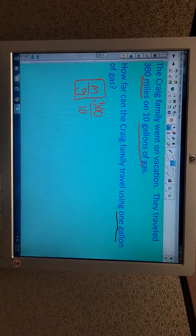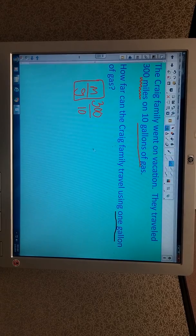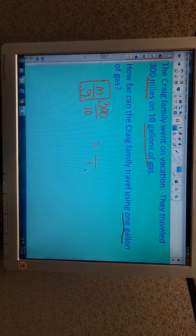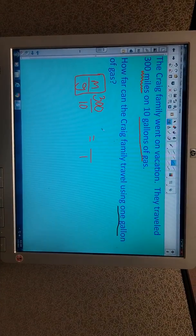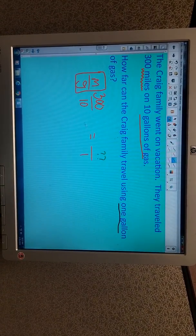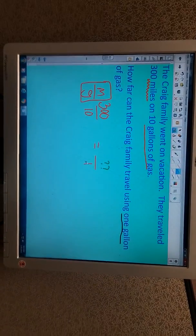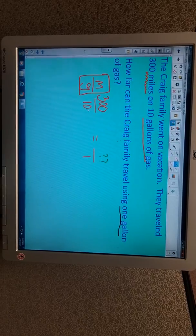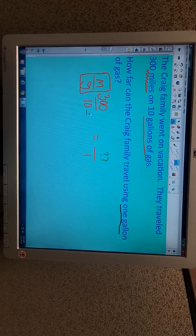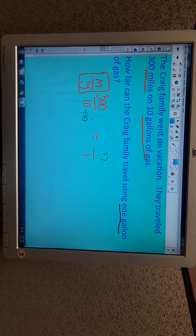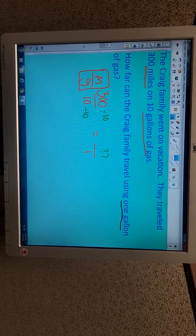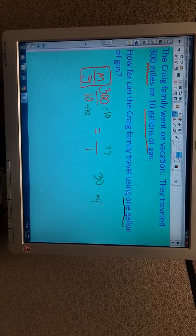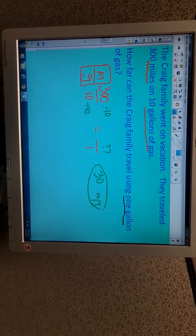As we keep reading, it says how far can the Craig family travel using one gallon of gas? This is called a unit rate. A unit rate has a denominator of one. So we want to know how many miles, that's what we're looking to find out, it can go per one gallon. The nice thing about unit rate here is any way to get to one, you have to divide the number by itself. So in this case, it's 10. 10 divided by 10 gives us 1, 300 divided by 10 gives us 30, which means this car can travel 30 miles per one gallon of gas.